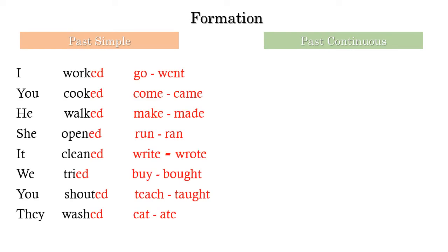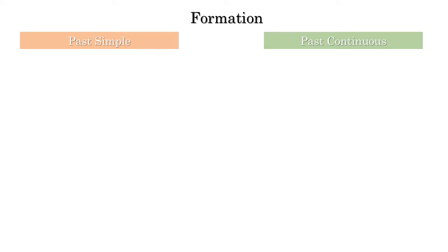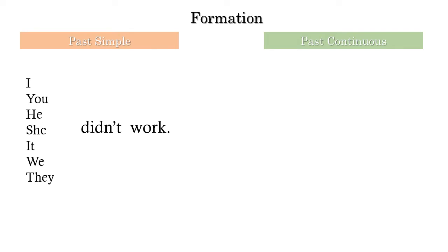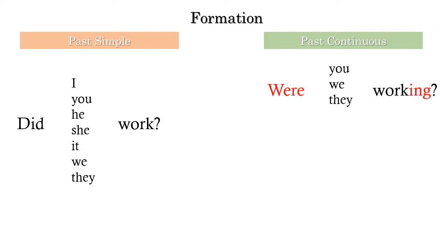For the formation: past simple uses -ED, -D, or -IED for regular verbs. Irregular verbs change completely — go/went, come/came, make/made, meet/met, run/ran, write/wrote, teach/taught, eat/ate. For past continuous: with you, we, or they use 'were + verb + ing'; with I, he, she, or it use 'was + verb + ing'. Negatives: didn't + infinitive for past simple; wasn't/weren't + ing for past continuous. Questions: Did + subject + infinitive; Was/Were + subject + verb-ing.